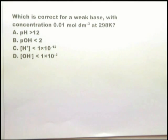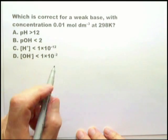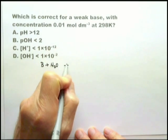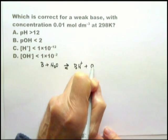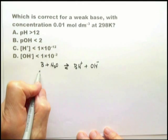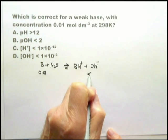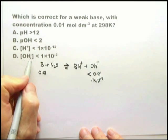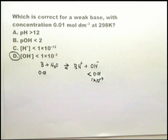Having done the previous one, this will be easy for you. You will see immediately that we're looking at a weak base. So it's B plus H2O — that's reversible — going to BH plus and OH minus. The B has a concentration of 0.01. OH minus has a concentration of less than 0.01, which is 1 times 10 to the minus 2. OH minus has a concentration of less than 1 times 10 to the minus 2. That is the answer. Given what I did before, you can stop there and move on.